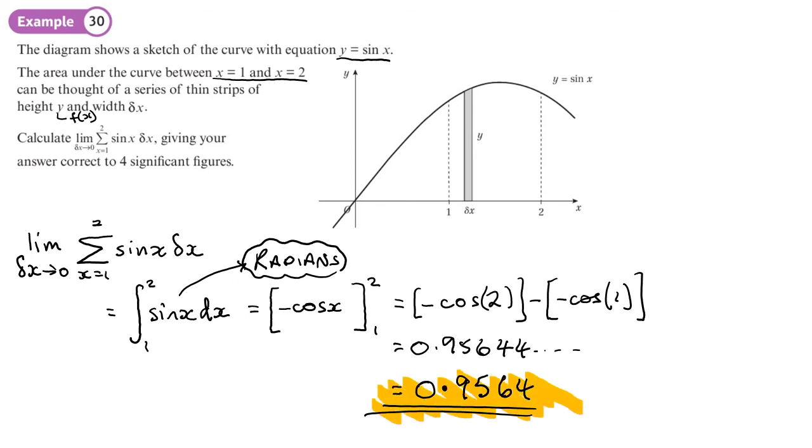Now, you can always check your answer when you do these integrations. Your integration button, which is underneath the menu setup button. So if you press that and we type in sine X or sine, and we use the button next to it to get X close brackets.